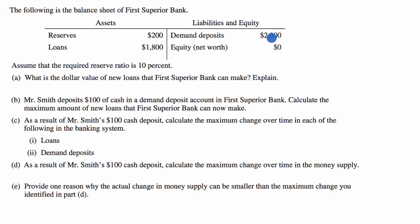That's a liability, because people can come to the bank and say they want that money. These are checkable deposits — they could even try to withdraw that money. And since all of that $2,000 is on the liability side, there is no equity right over here. These two should sum up to $2,000, the same as you have on your asset side.